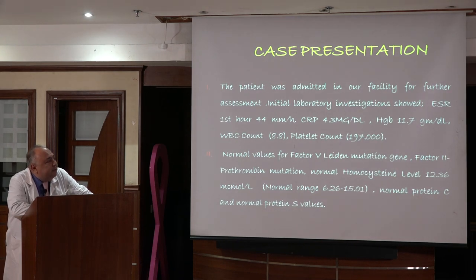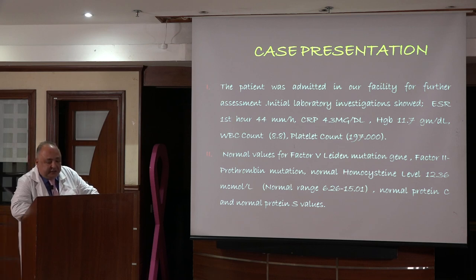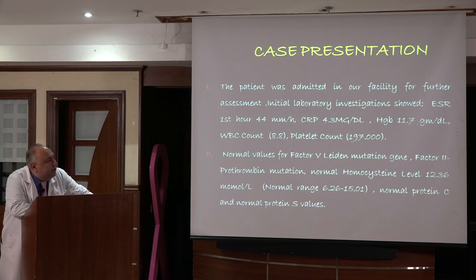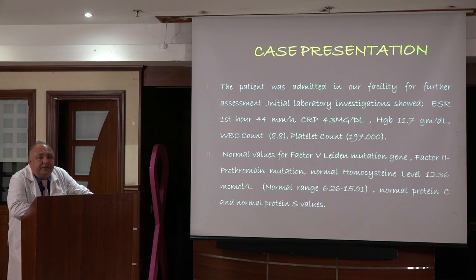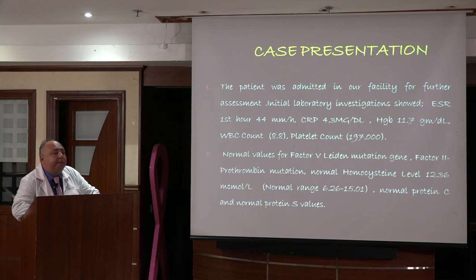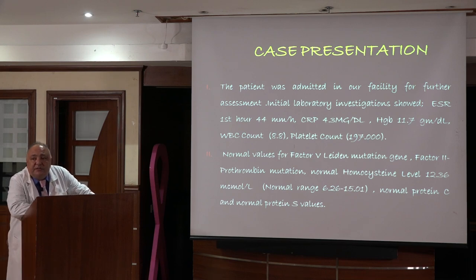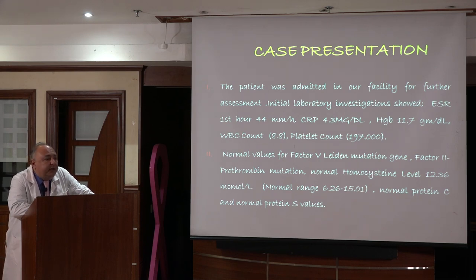The patient was admitted for further assessment and showed elevated ESR of 44 in the first hour, elevated CRP levels, and hemoglobin within normal range. WBC count and platelet count were within normal. For initial lab investigations in acute ischemia, we should exclude underlying causes — for example, systemic lupus can present with acute arterial ischemia.